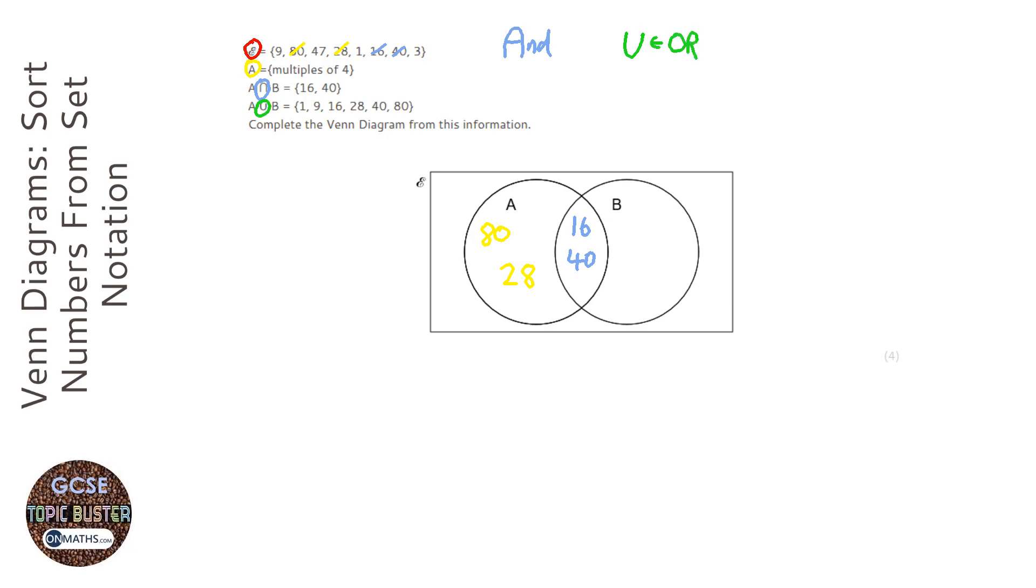Now the union is just a posh way of saying OR. It can be in A, it can be in B, it can be in both. So it's either in A or in B or in both. It's just in the Venn diagram.